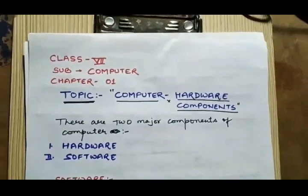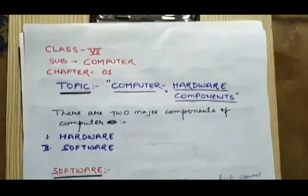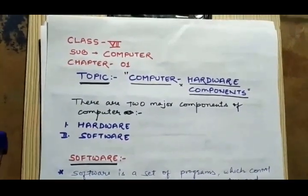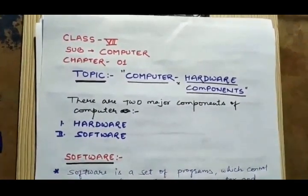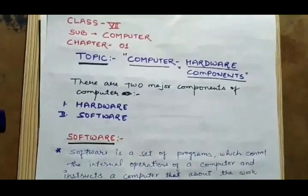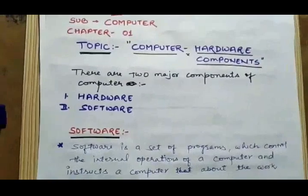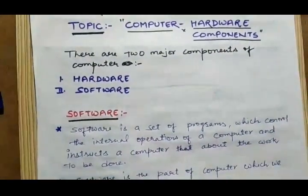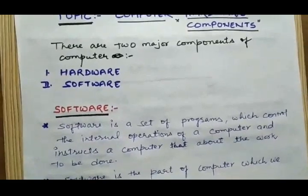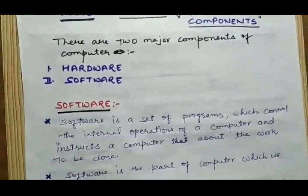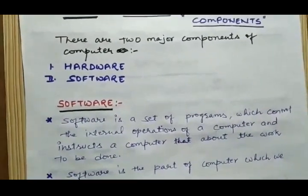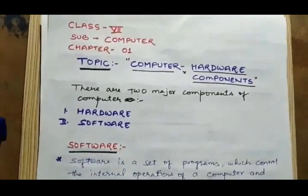Hello everyone, I hope you all are doing well. Today we are going to start the first chapter of Class 7th: computer hardware components. Nowadays we know the importance of computers in our life. A computer is a machine that makes our living easy. It is used in each and every area, so it is a requirement that everyone must know how to use this machine. In this series we are going to understand the main concept of computer hardware.